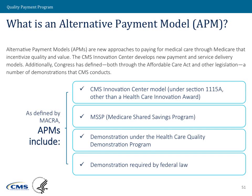When we say the word APM, it means this huge universe of payment models that we use. They're all tied together by the fact that there are new approaches to paying for care under Medicare, and they can change the way that we reward quality and value. The CMS Innovation Center produces a number of these new payment models every year. An APM means any of these four categories: CMS Innovation Center models other than the Health Care Innovation Awards, the Shared Savings Program and any of those tracks, or any other federal demonstrations required by law. Collectively, those are the world of APMs.